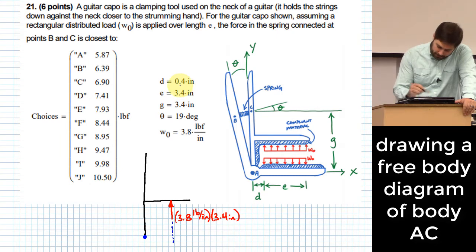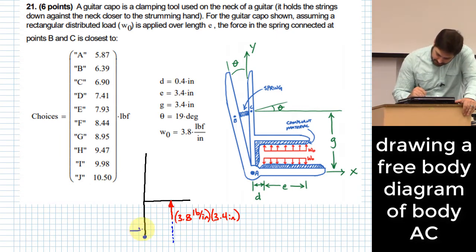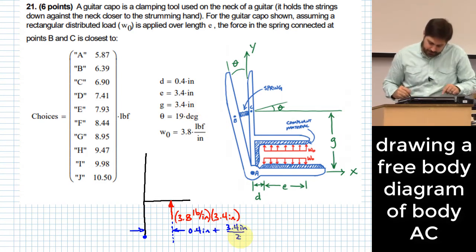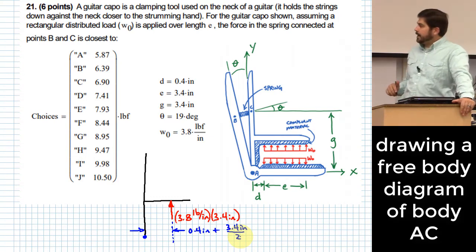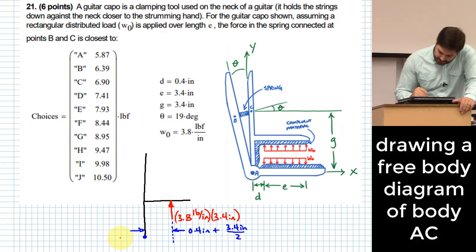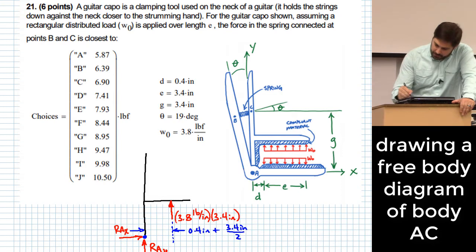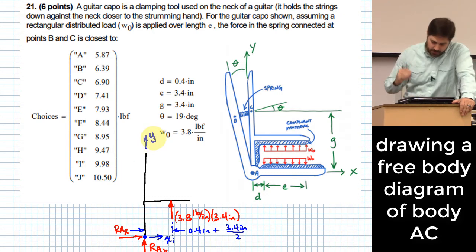So we're going to have D as 0.4. Tell you what, I'll just write it like this. 0.4 inches plus 3.4 inches over 2. All right. Then what? We have a pin at A. Why don't I go ahead and write those on here. I'll show these two reactions here, and let me call this one maybe R-A-Y and this one R-A-X, which sort of implies that I have chosen a coordinate system where I've got X here and Y here. So I'll go ahead and put those on there.